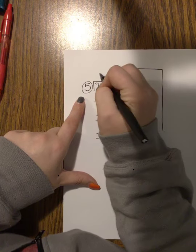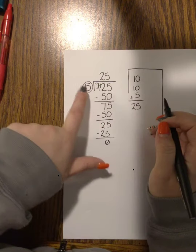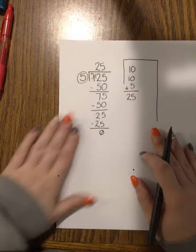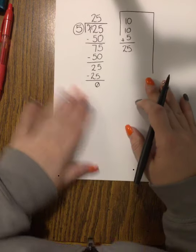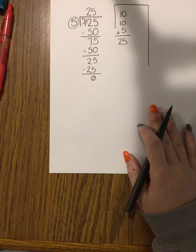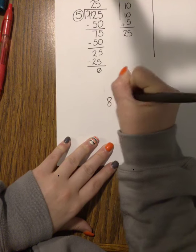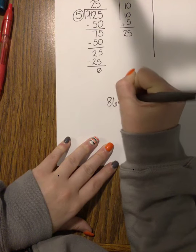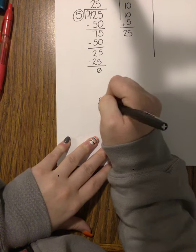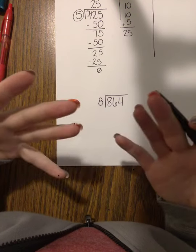Now one other way that you can do partial quotients—I'm going to show you one other method. If you have a larger problem, let's say you have the number 864 divided by 8. Now this is a really large number.